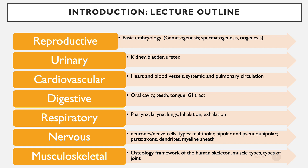For the digestive system, we start with the oral cavity, look at the teeth and tongue, some salivary glands as well, and then the general architecture of the gastrointestinal tract — all the way from the oesophagus to the anus. We look at the respiratory system: the pharynx, larynx, obviously the lungs, inhalation and exhalation, and how it also relates to the cardiovascular system.